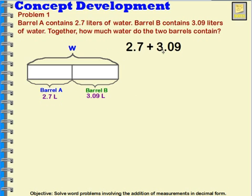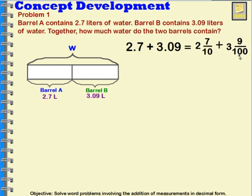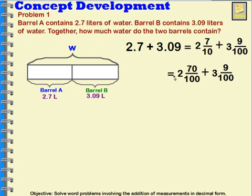So I'm going to add them together. When I look at this, I don't want to just think about adding 7 plus 9, because this is not the same unit — this is 7 tenths and this is 9 hundredths. I can see that best when I write it as a fraction. So instead of having 2 and 7 tenths, I can decompose these tenths into hundredths, and I will have 2 and 70 hundredths plus 3 and 9 hundredths.